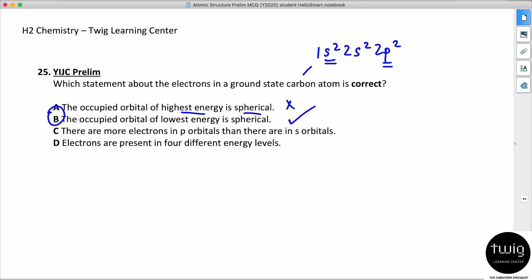There are more electrons in p orbitals than there are in all s orbitals? In fact, p orbitals have two electrons, s orbitals have four all together. You can see two plus two is four electrons.